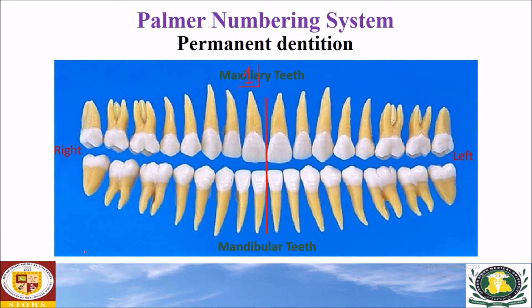For the left maxillary central incisor, we also number it as one, since numbers start from the midline. To distinguish it from the right side, we draw a symbol indicating that it is the maxillary central incisor of the left side.